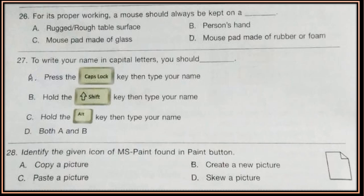Question 28. Identify the given icon of MS Paint found in the Paint button. Options: copy a picture, create a new picture, paste a picture, or skew a picture.